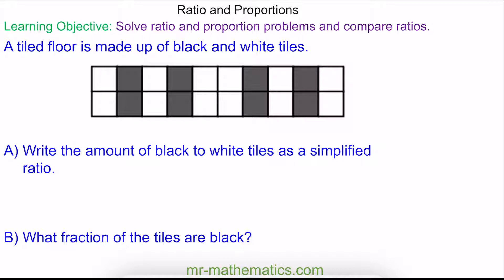We'll begin with a question where we have a pattern made up of black and white tiles. We've been asked to write this as a simplified ratio in question A. I'll begin by writing the ratio of black to white — by counting the tiles we have 8 black and 12 white.